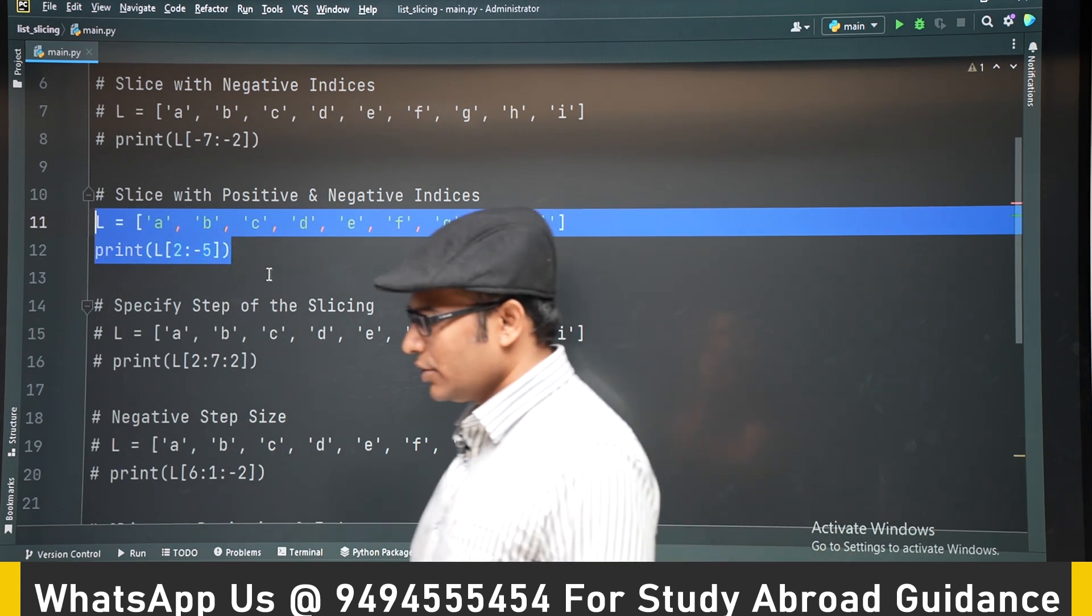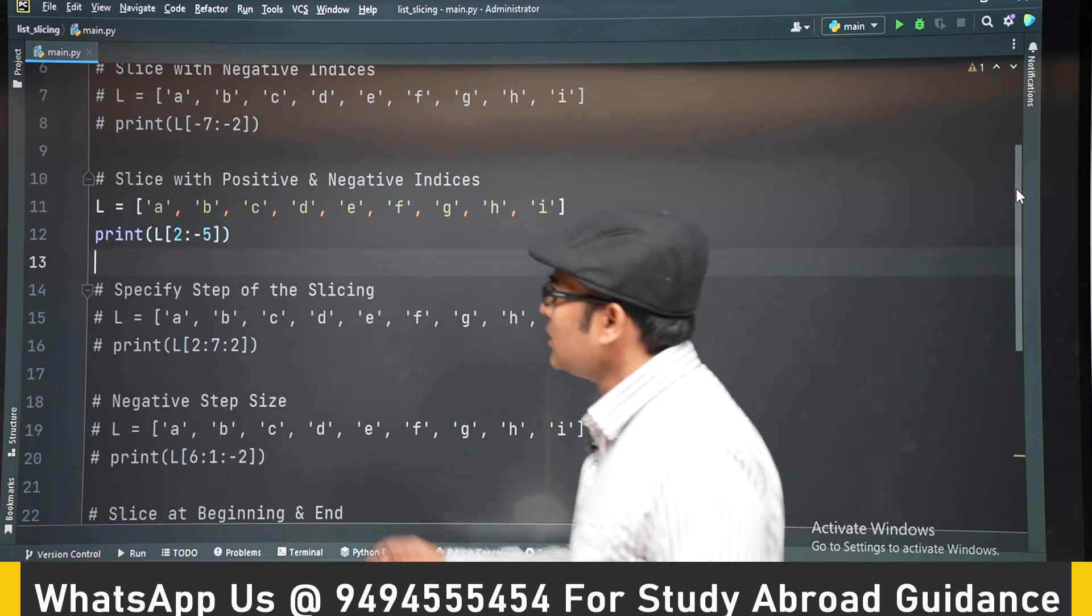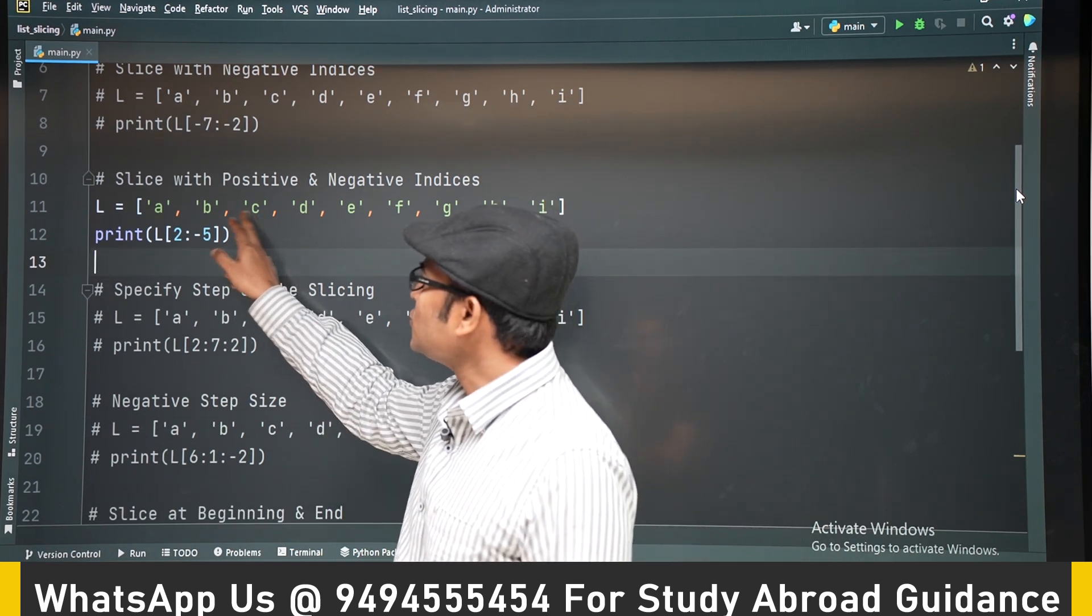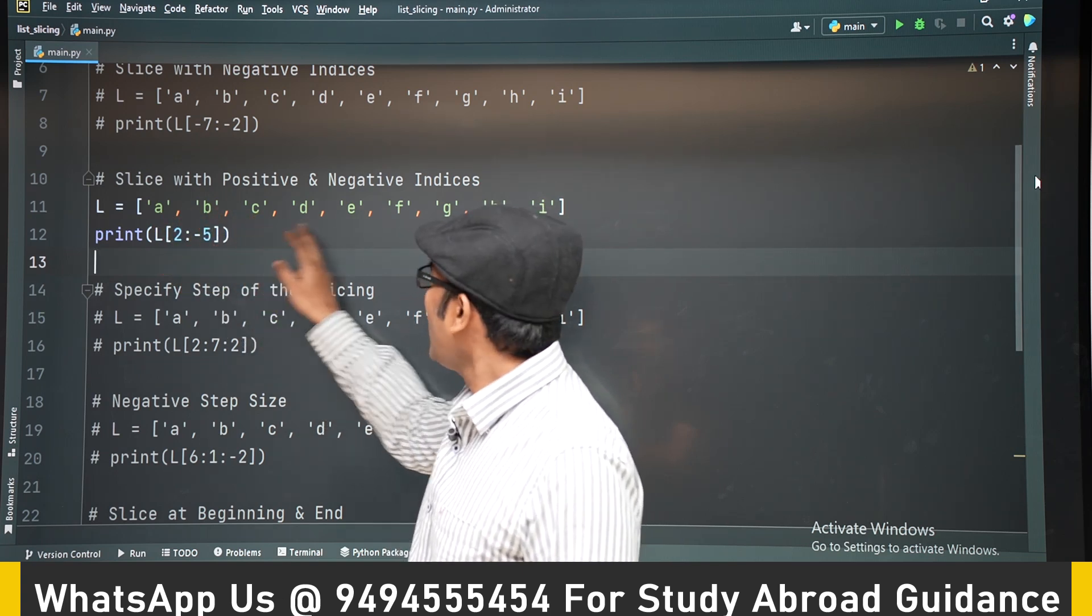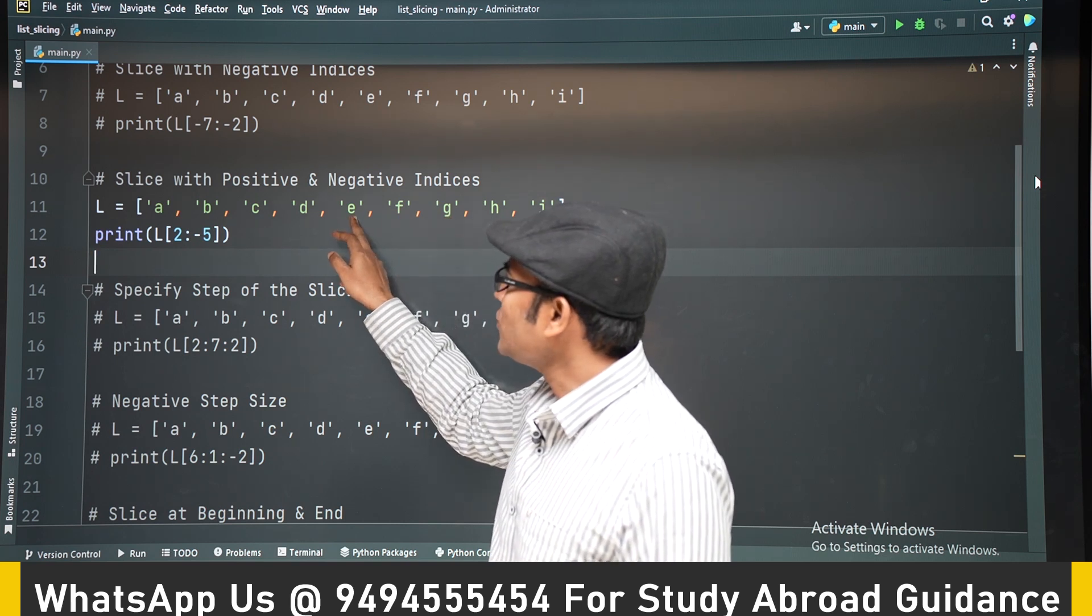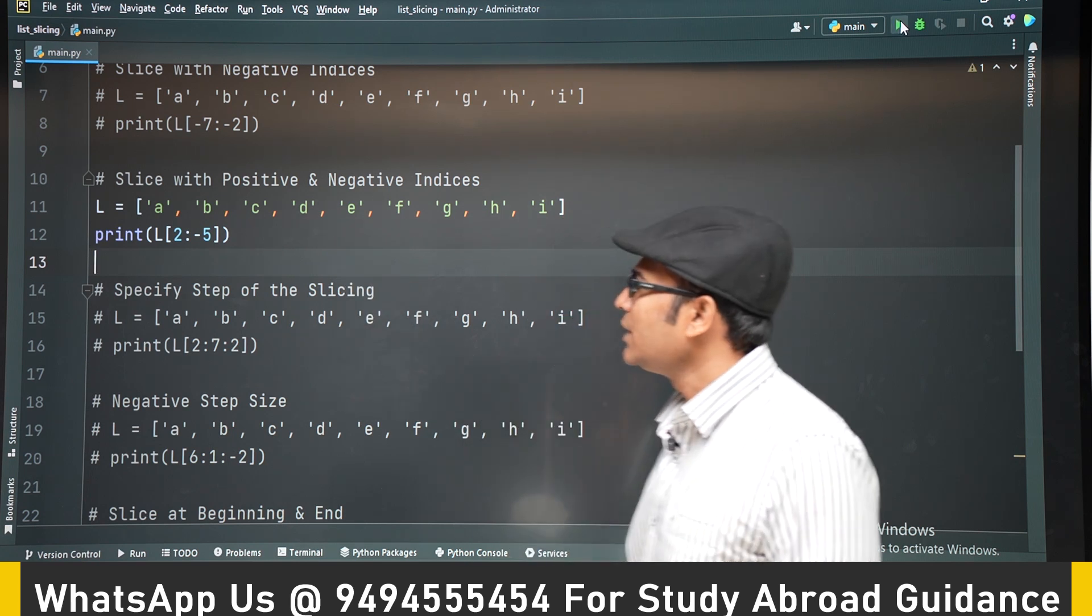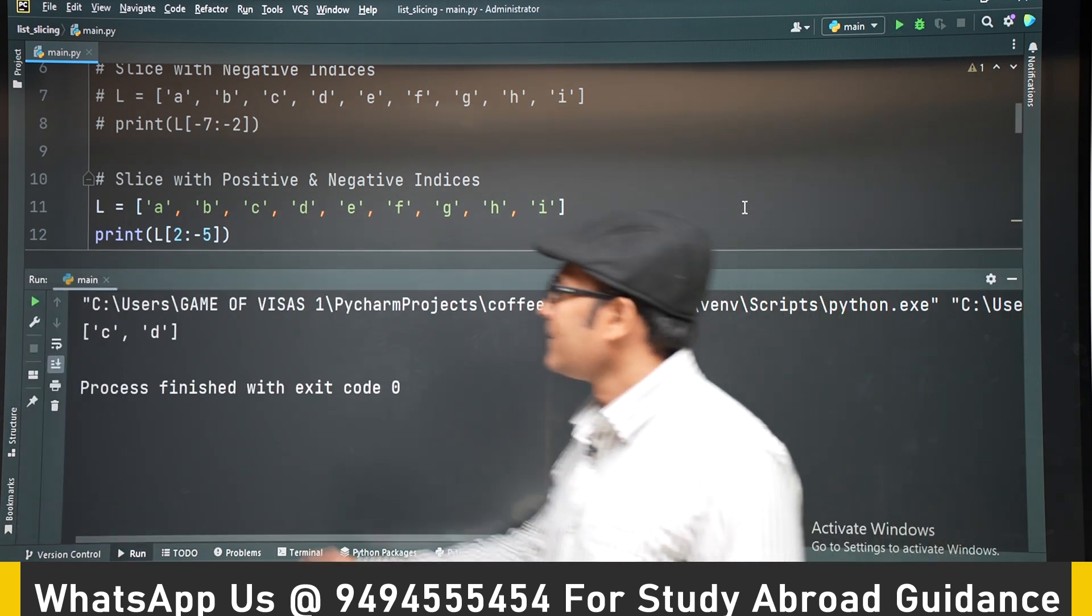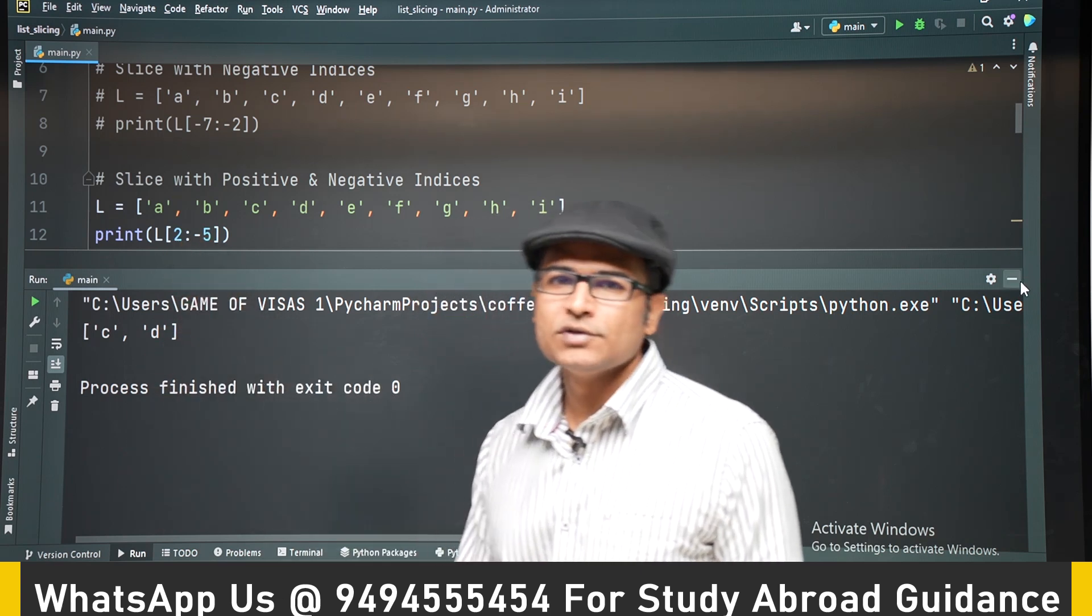And also you can get, so here the starting index is 2, which means C. It is going to start from C, and minus 5 means it will go till D without going to E. So now if you see that, C to D. So one index is positive, other index is negative, you can use like that.